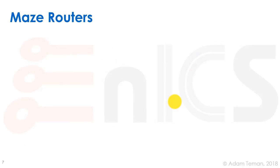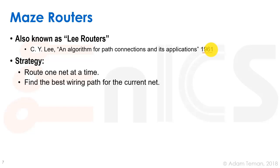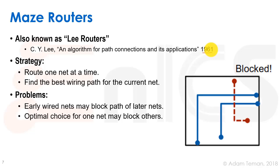With this basic grid assumption, we can develop what's called a maze router or Lee router — an algorithm class that started in 1961 with a breakthrough paper by C.Y. Lee. The strategy is to route one net at a time: we select one net from all our nets and route it, finding the best — basically shortest — wiring path. There is a problem though: routing one net at a time means we need a heuristic to choose which net to route first.